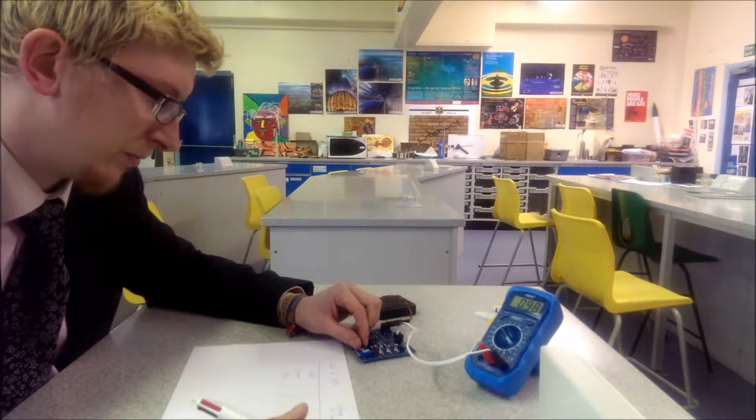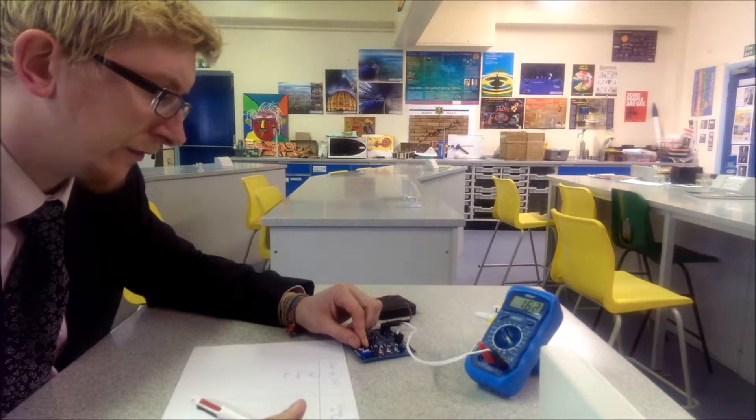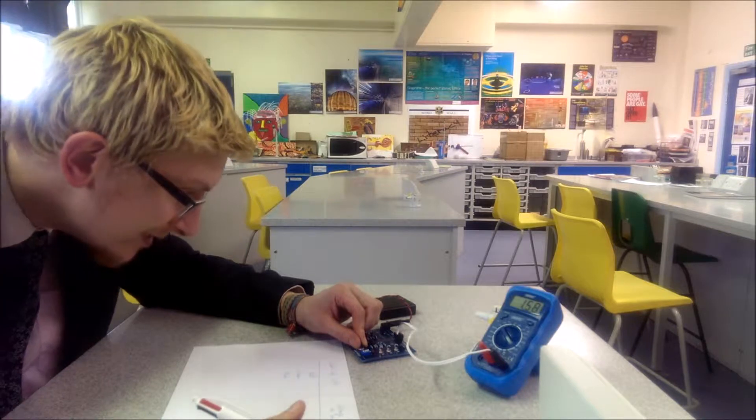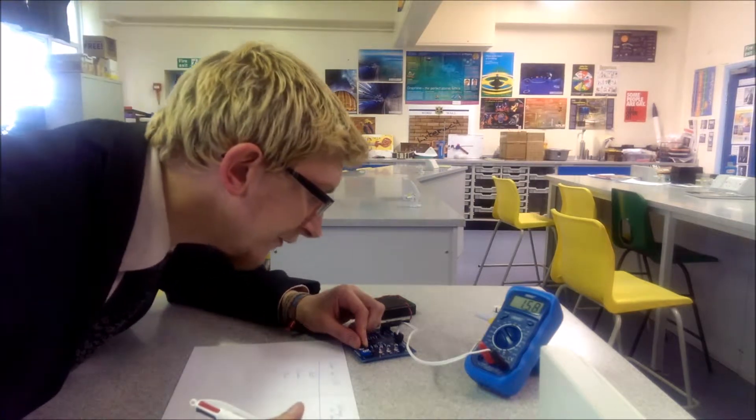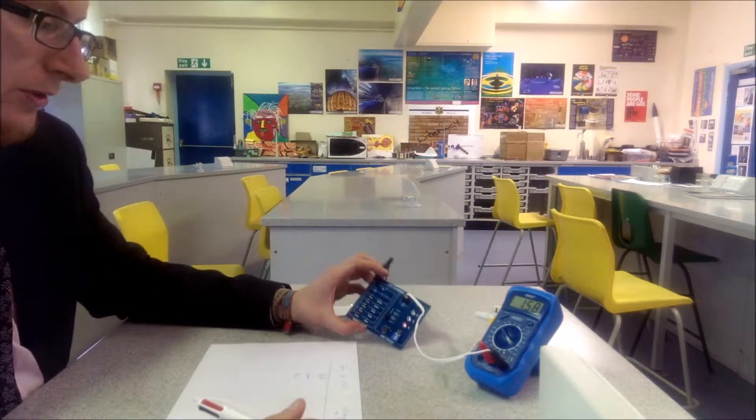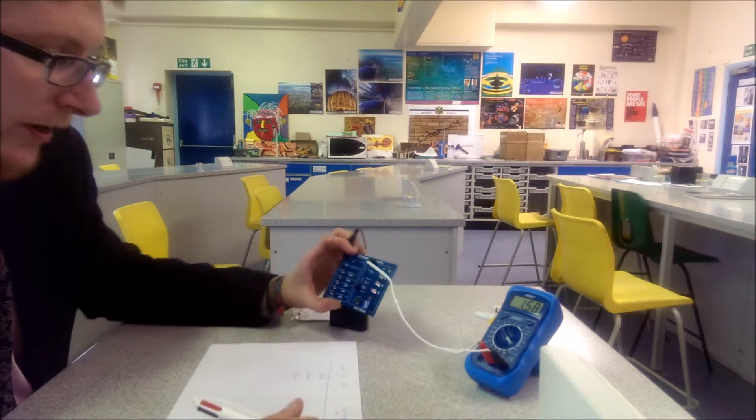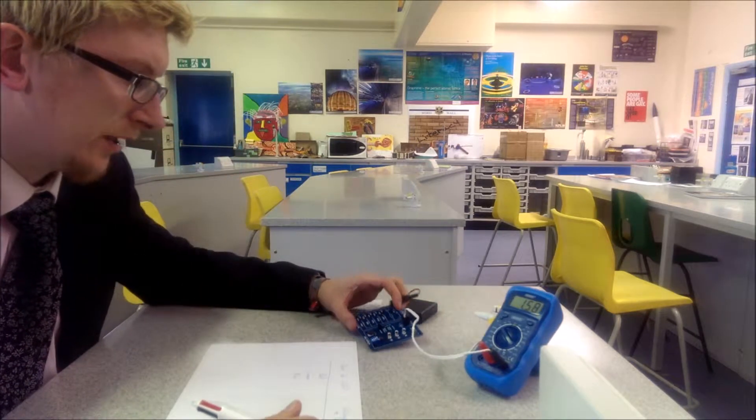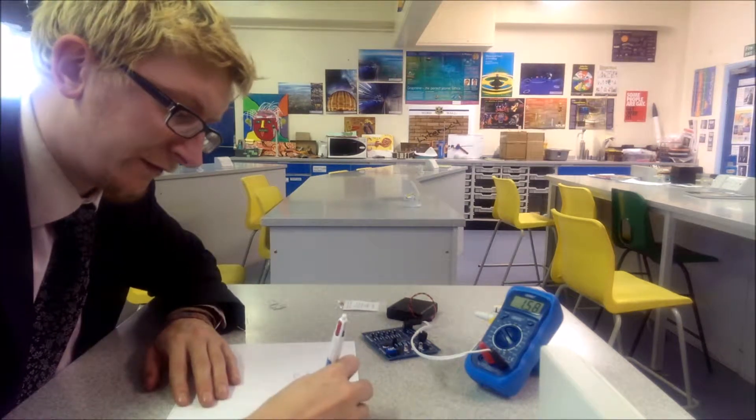I'm going to turn up my voltage and record the voltage. I can see the red LED come on about there. I can see a very, very small light. The red light is just about on, and that voltage is 1.58V.